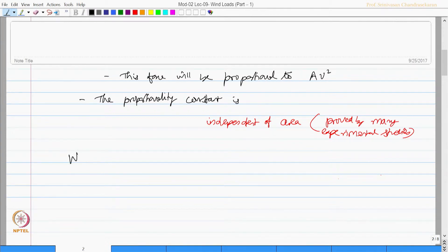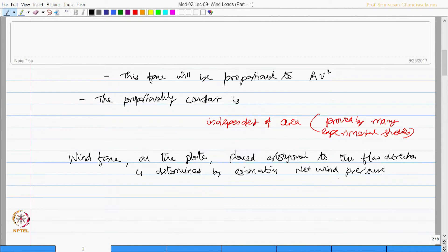The wind force exerted on a plate placed orthogonal to the flow direction is determined by estimating net wind pressure, which I denote as p_w, where w stands for wind and p stands for pressure.